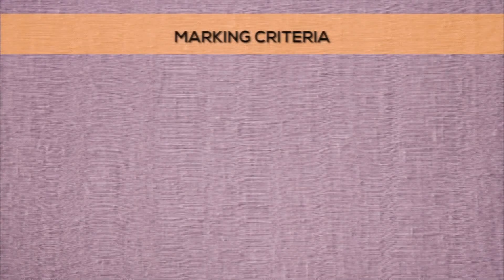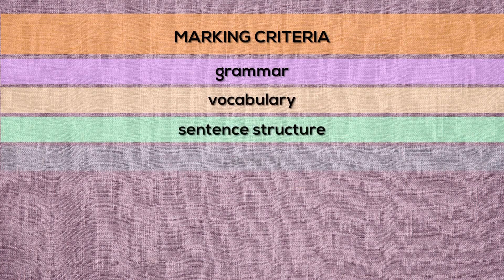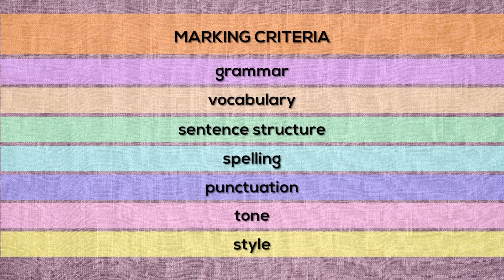So how does the examiner mark your essay? Normally, the examiner will mark your essay based on impression — this means there is no fixed formula. However, they will evaluate your essay based on several criteria: grammar, vocabulary, sentence structure, spelling, punctuation, tone, and style. Based on these criteria, they will determine suitable marks for your essay. So it is important for you to have adequate knowledge in these areas so that you can score high marks for your exam.